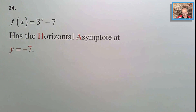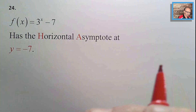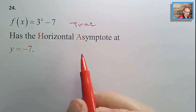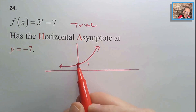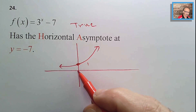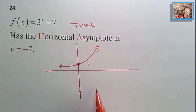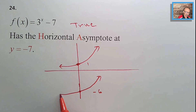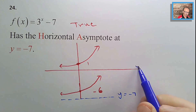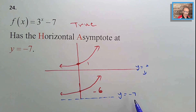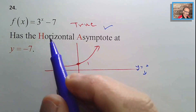Number twenty-four: f(x) = 3^x − 7 has a horizontal asymptote at y = −7 — true. The original asymptote y = 0 shifts down 7 units. The key point (0, 1) moves down 7 to (0, −6), and one unit below that is the new asymptote at y = −7.